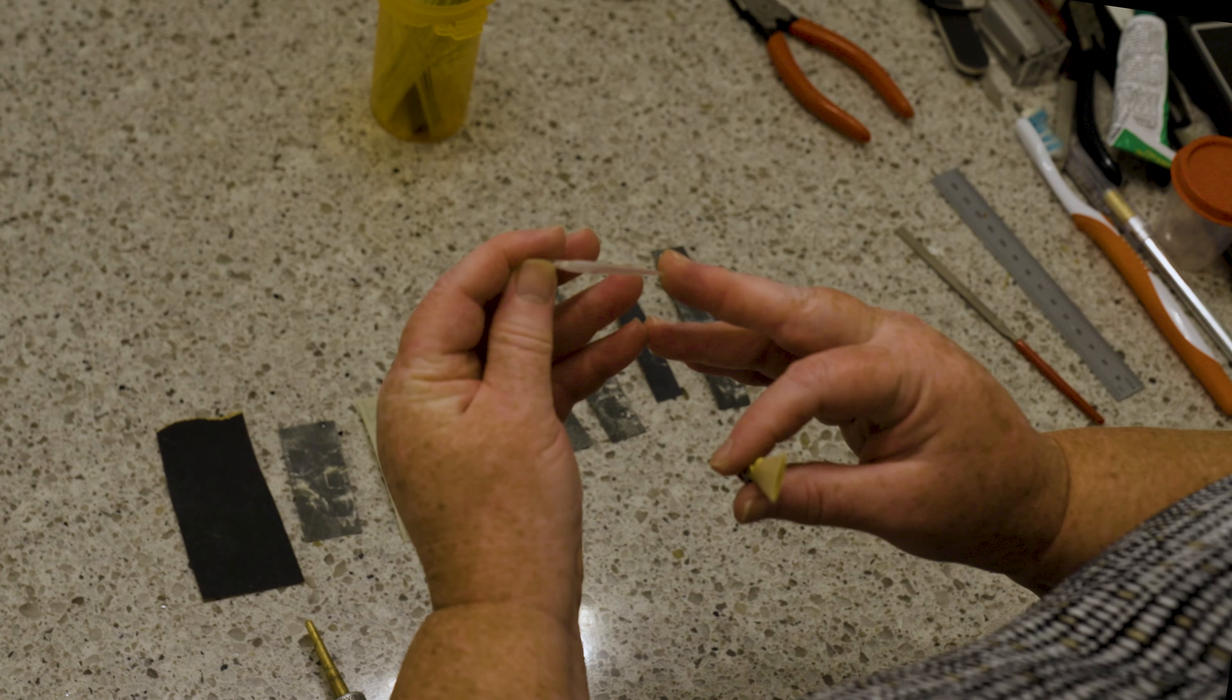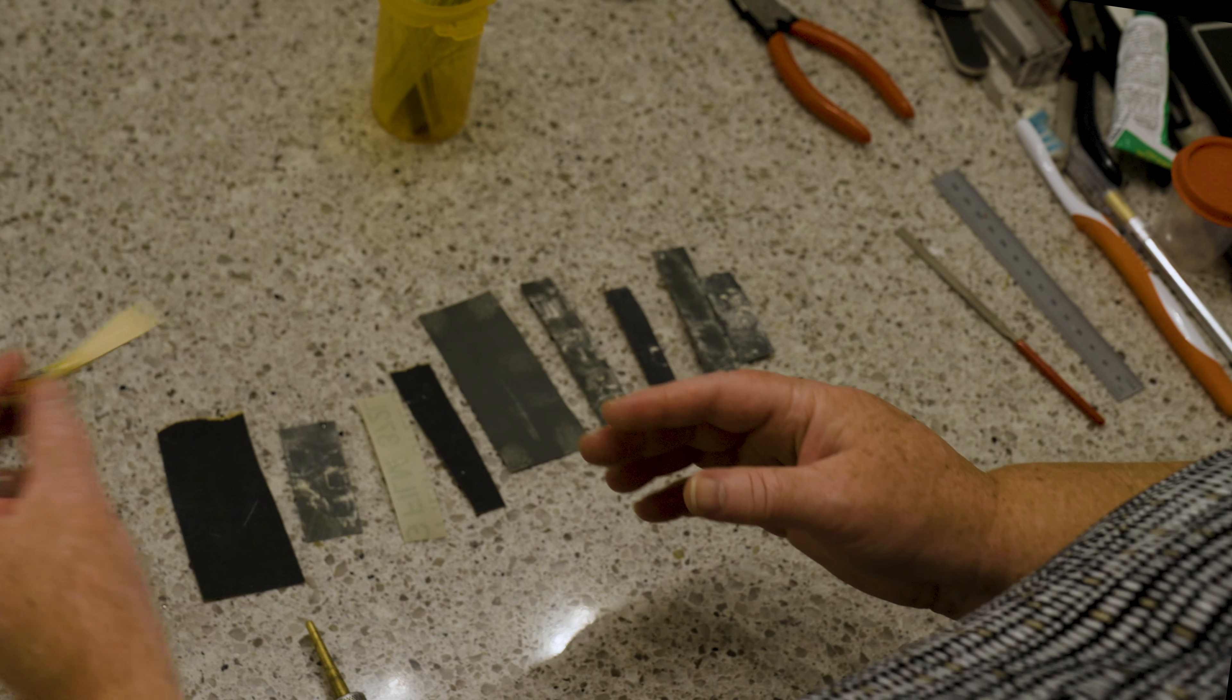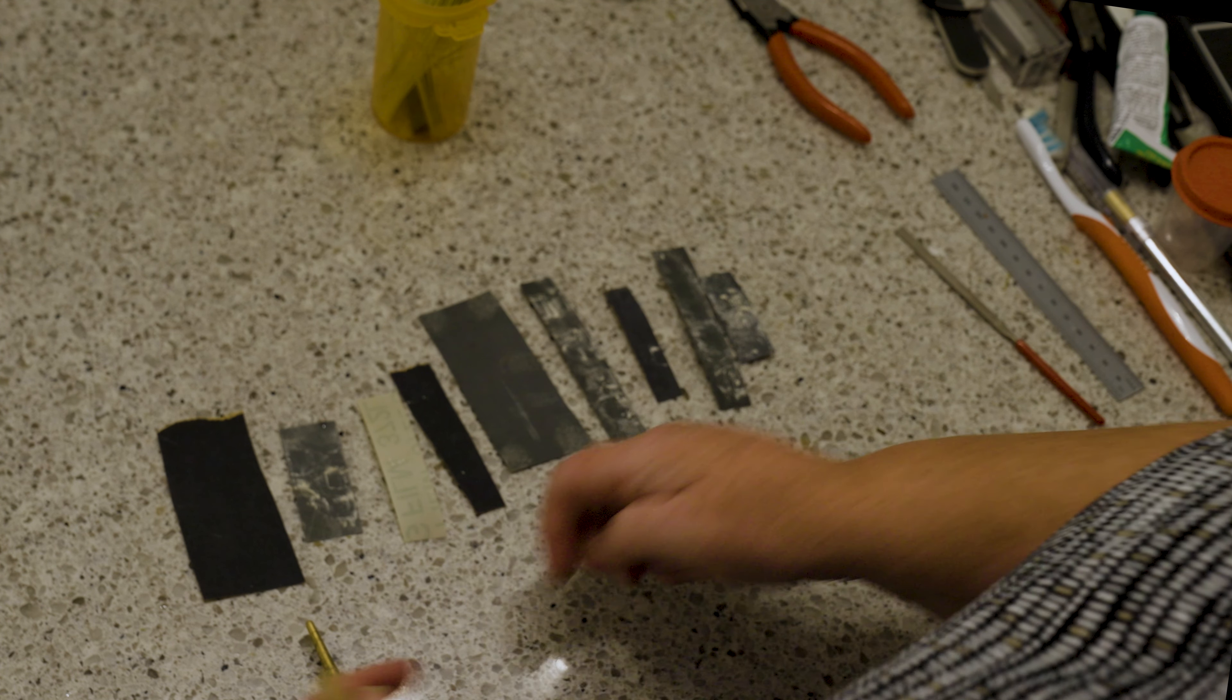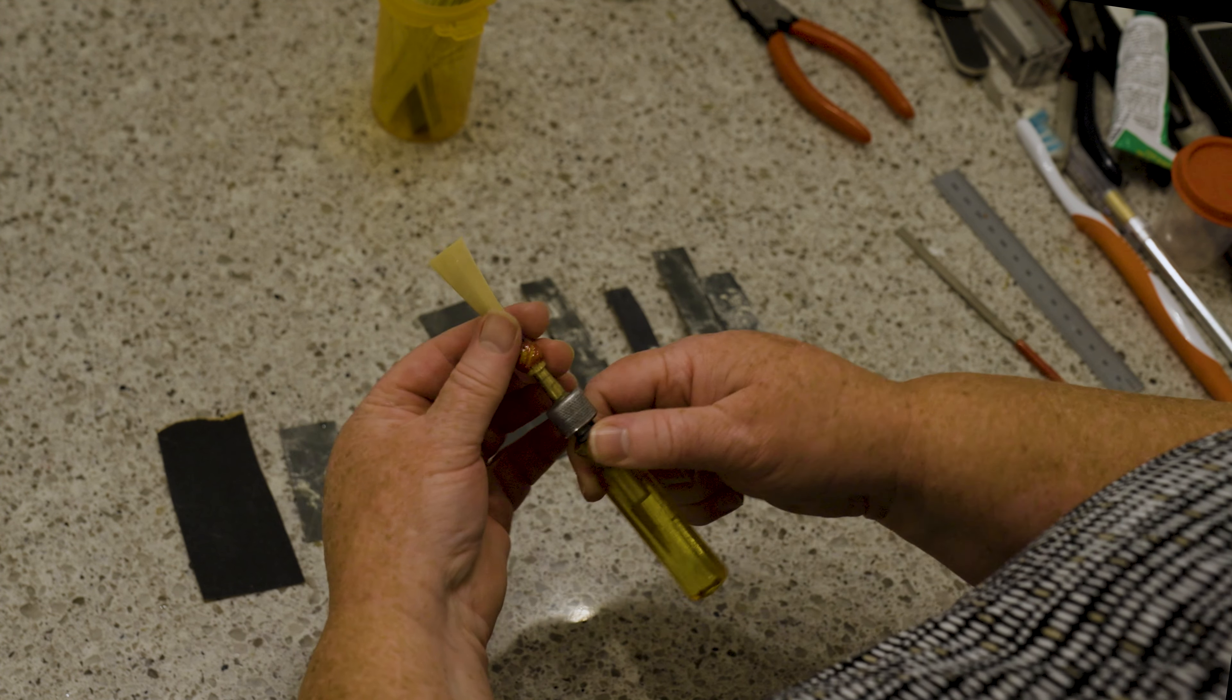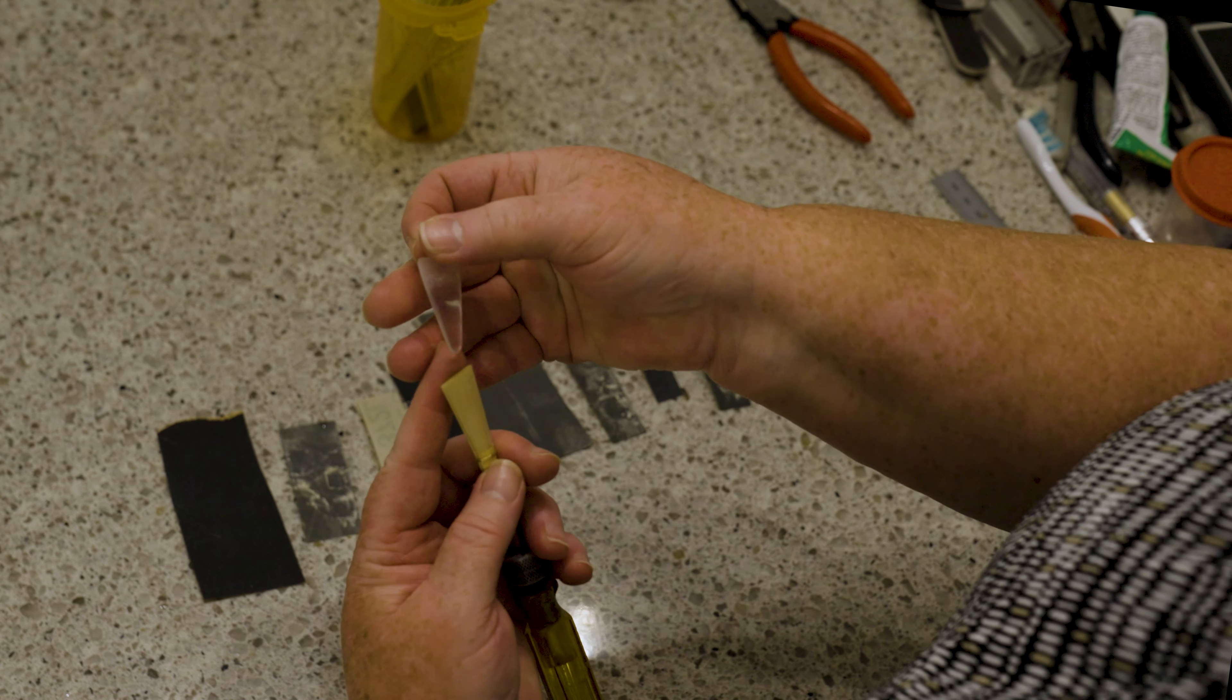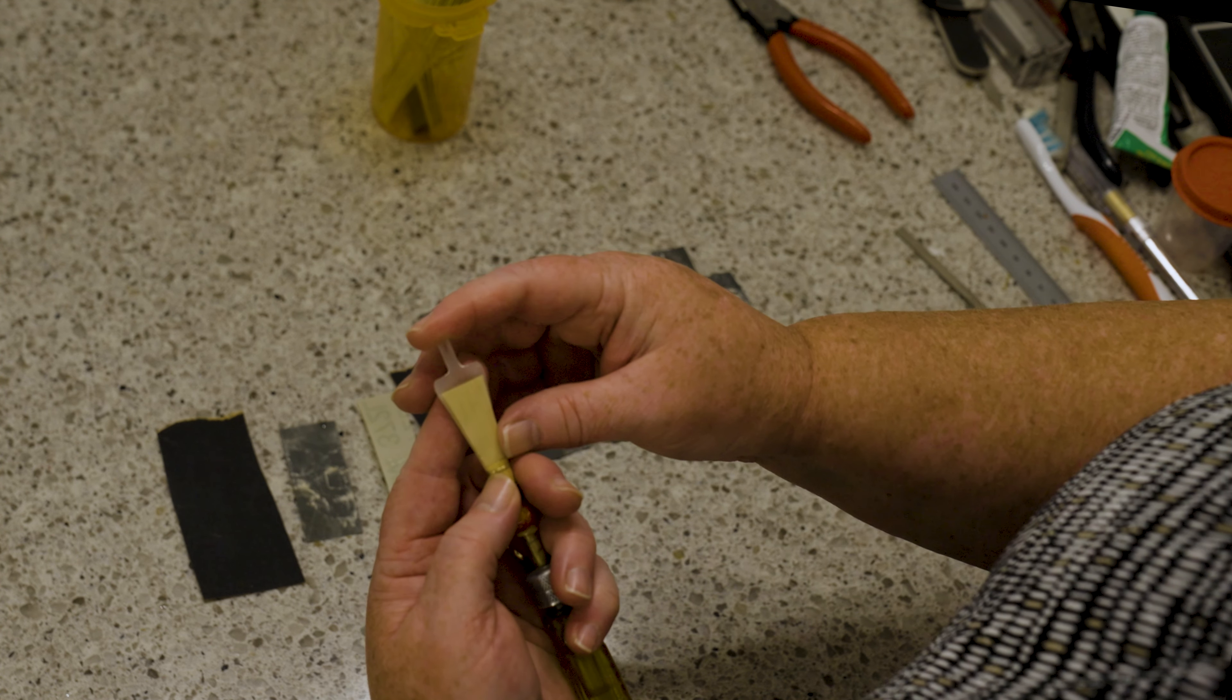Once again, soak the reed and you're going to slide this in just like we do the mandrel to protect the tube. There's space between the blades, we're going to carefully slide this between the blades and that's going to take up the space between the blades so that they won't crack.